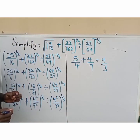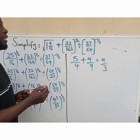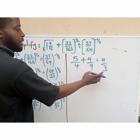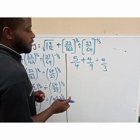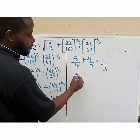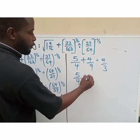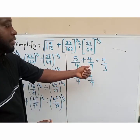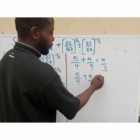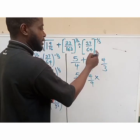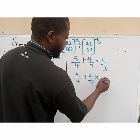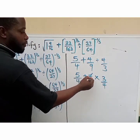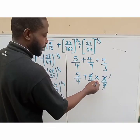Now the next thing is to apply BODMAS — division comes first. So we deal with the division: we have 5 over 4 plus (4 over 9 divided by 4 over 3). By the basic rule of maths, we change the division sign to multiplication and flip the second fraction — that gives 3 over 4. So 4 cancels with 4, leaving 5 over 4 plus 1 over 3.